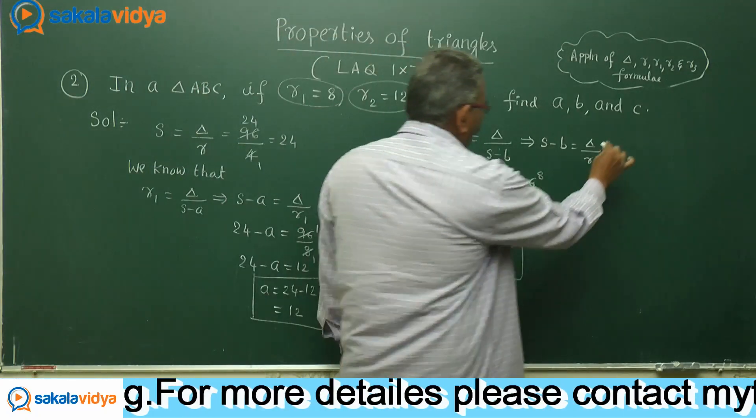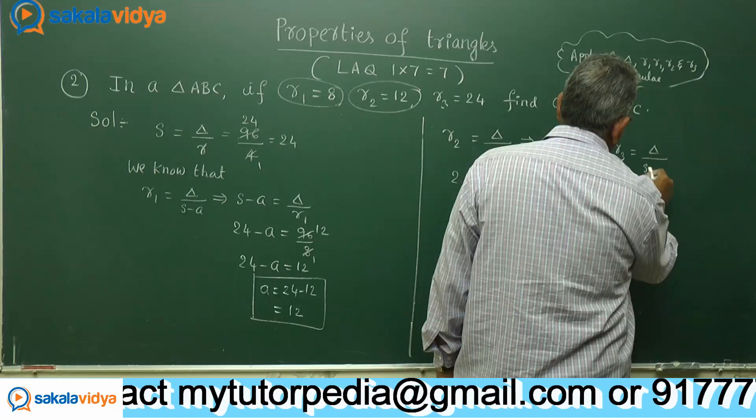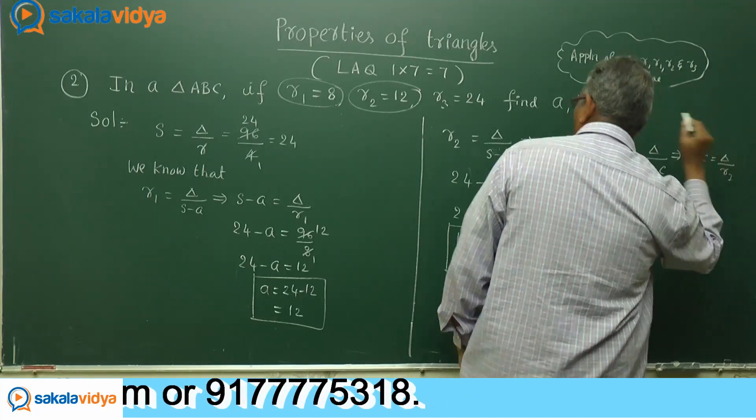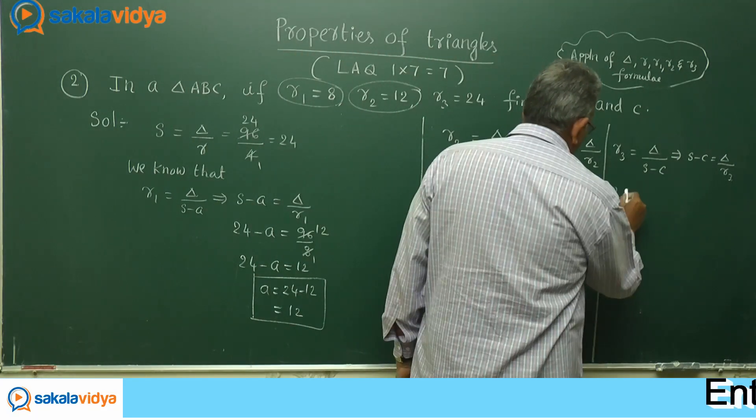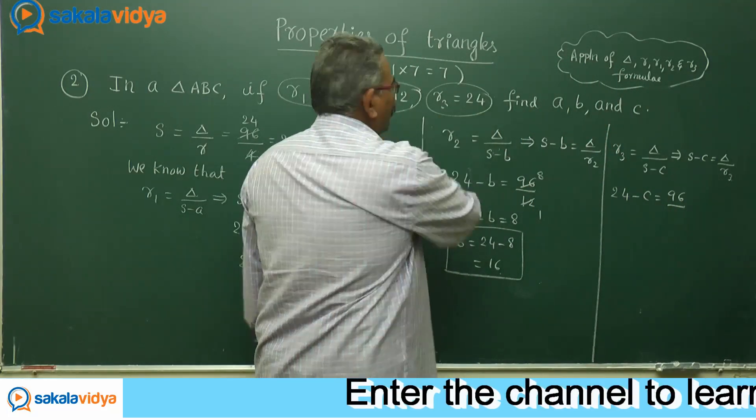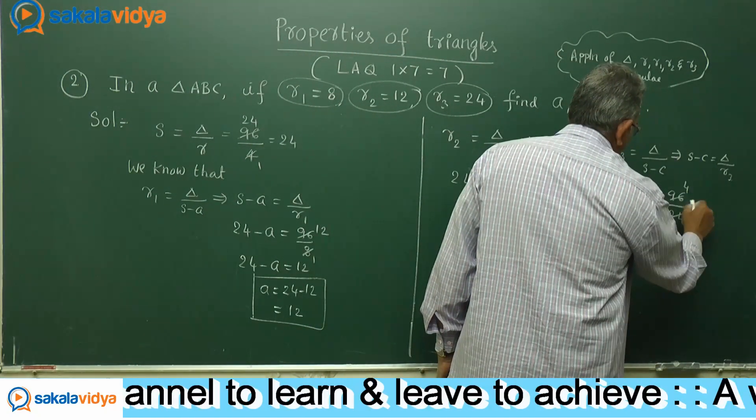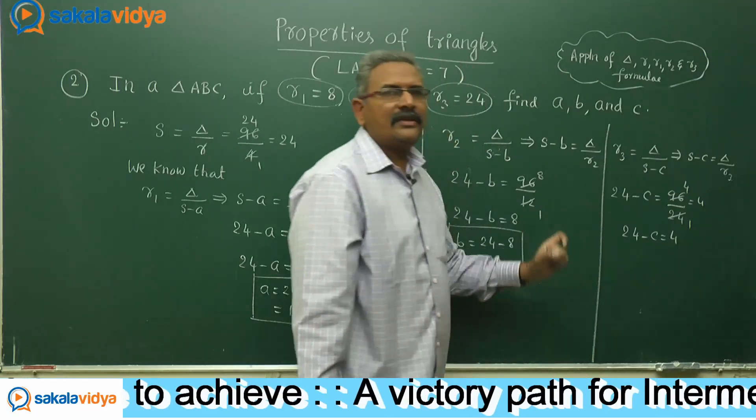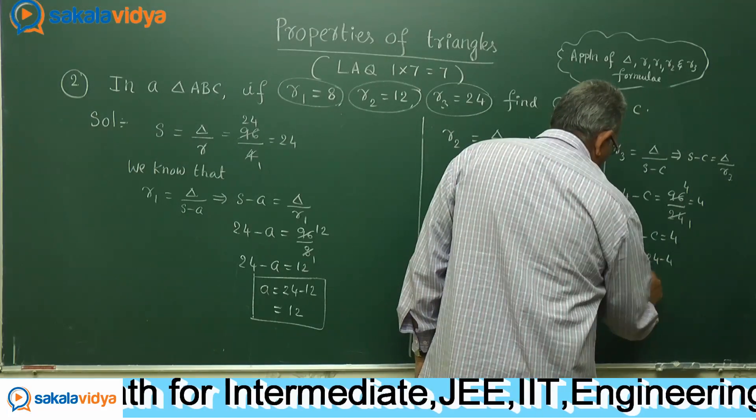Now let us find out R3. We recall R3 value, that is delta by S minus c. S minus c equals delta by R3. S stands for 24 minus c equals delta is 96, R3 is 24. So 96 by 24 equals 4. 24 minus c equals 4. This is a linear equation in one variable c. c equals 24 minus 4, which equals 20.